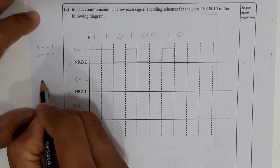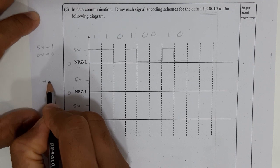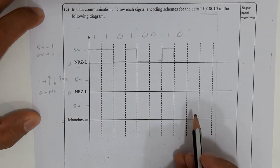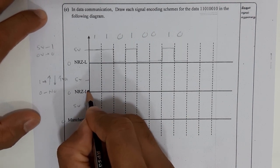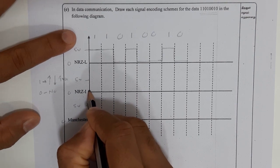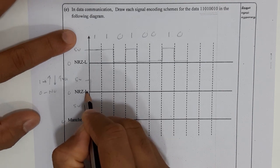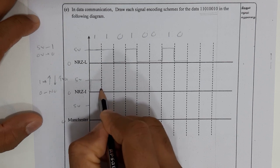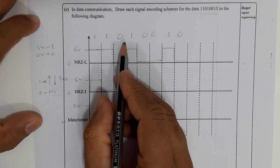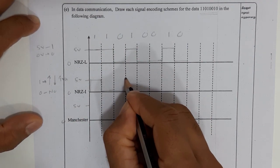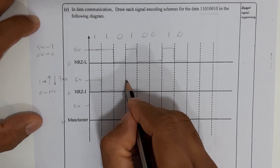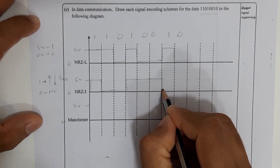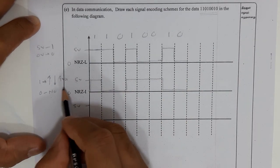Moving to NRZ-I: to represent 1 there must be a transition (low-to-high or high-to-low); to represent 0, no transition — stay at the same place. Starting at 0 position: bit 1 means transition, so bring it up. Next bit 1 means another transition — since I'm at high, bring it down to low. Bit 0 means no change, continue. Bit 1 means transition again, bring it up. Then 0, no change; 0, no change; bit 1, transition — bring it down; bit 0, no change.